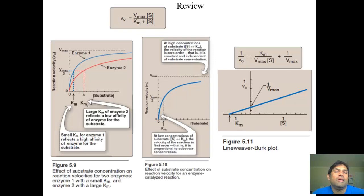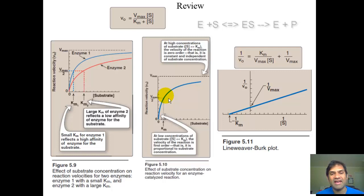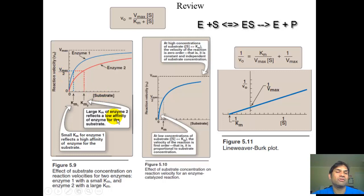As a review, the Michaelis plot is a graph of V on the y-axis (reaction velocity) and substrate concentration on the x-axis. Under the steady-state hypothesis, enzyme plus substrate goes to an enzyme-substrate complex, which breaks down to E plus P. The Michaelis plot looks like this for different enzymes, and what's important is Km.